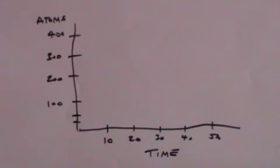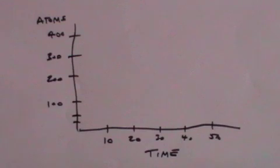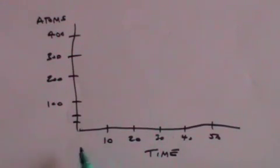So what does this decay look like? This is a chart which shows the number of atoms along this axis and the time in seconds along this axis.